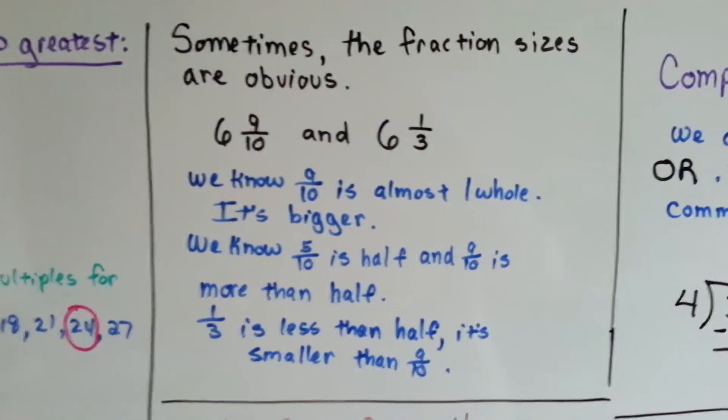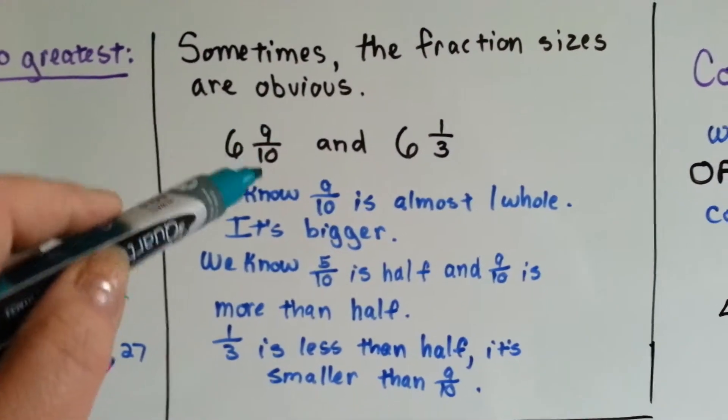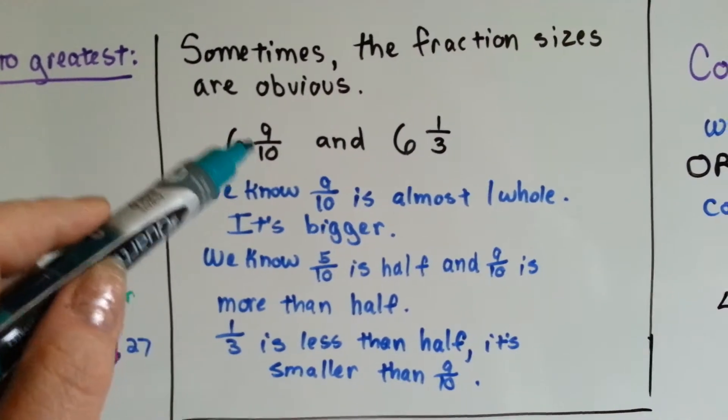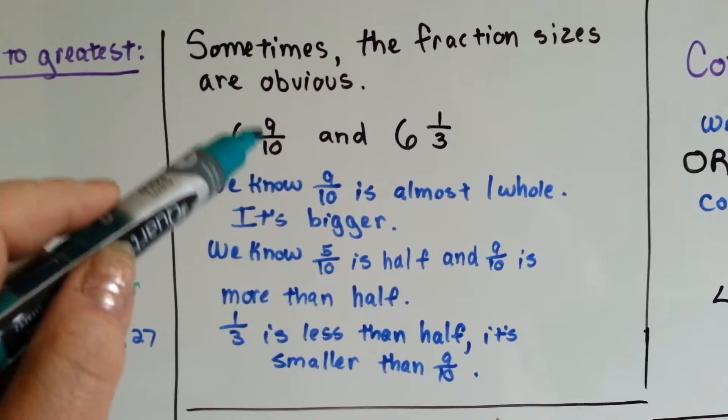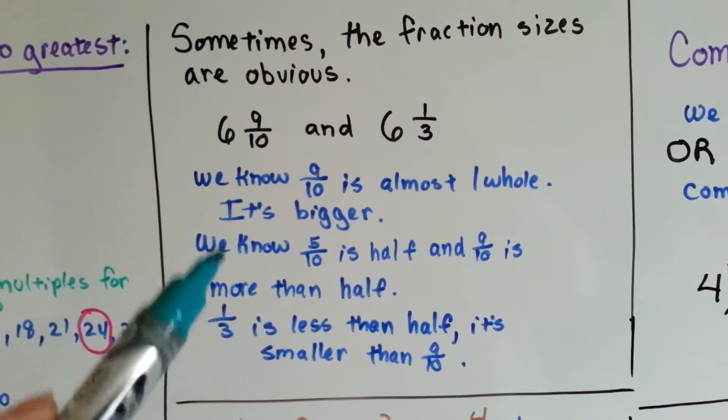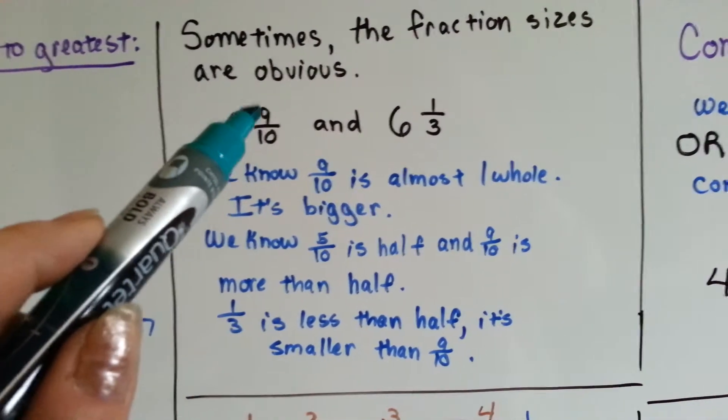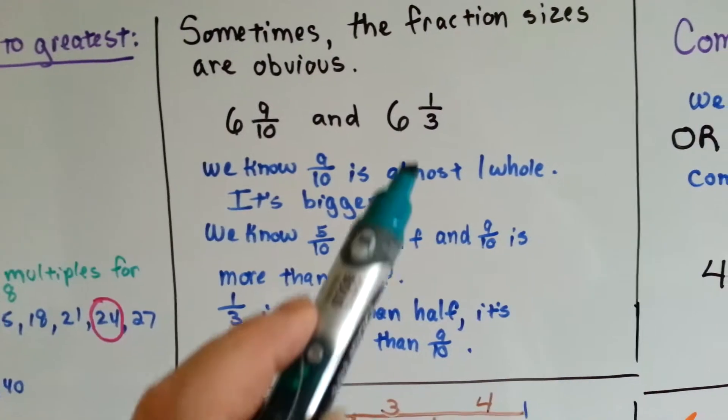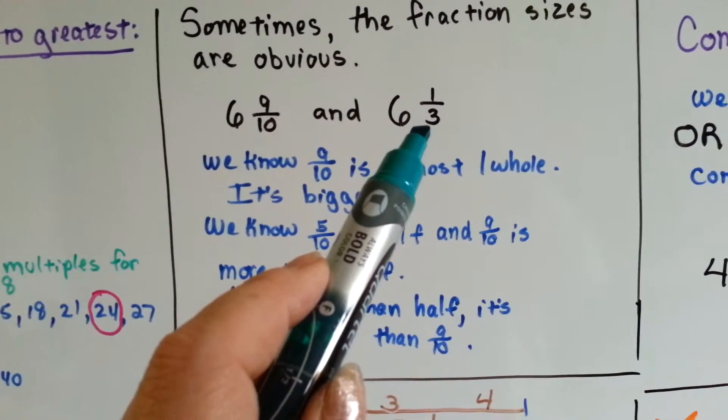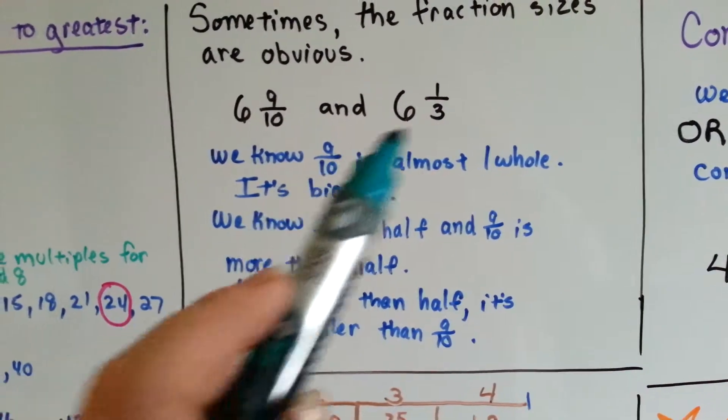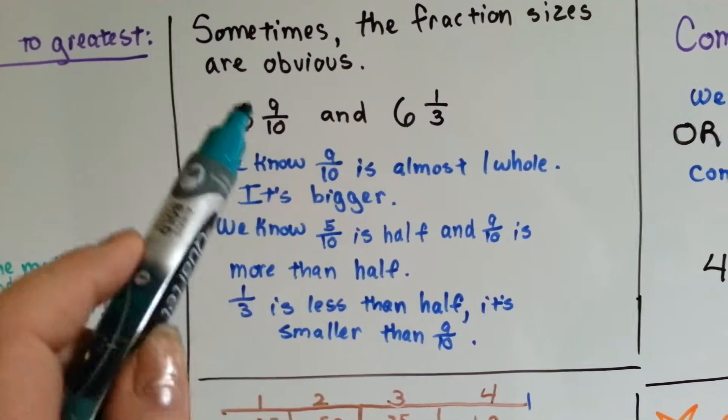Sometimes the fraction sizes are really obvious. We have 6 and 9 tenths and 6 and one-third. We know 9 tenths is bigger, it's almost one whole, it's almost ten-tenths. The other way to do it is to say, well, 5 tenths is half, and we know 9 is bigger than half, and we know that one-third is not more than half. So it's not bigger.